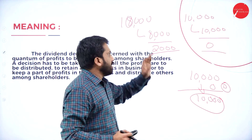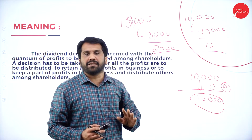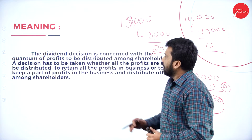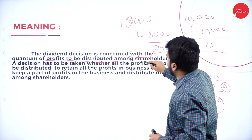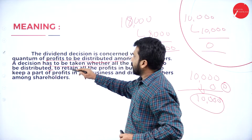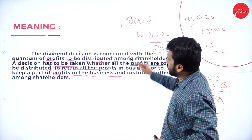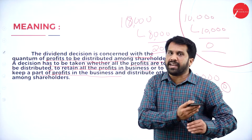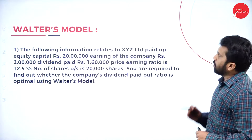What is dividend decision? Whether the company should give the full amount, whether they should give part of the amount, or whether they should retain it as earnings — all these decisions are called dividend decision. Formally: the dividend decision is concerned with the quantum of profit to be distributed among shareholders — whether all profits are to be distributed, all retained, or a part kept and the rest distributed.